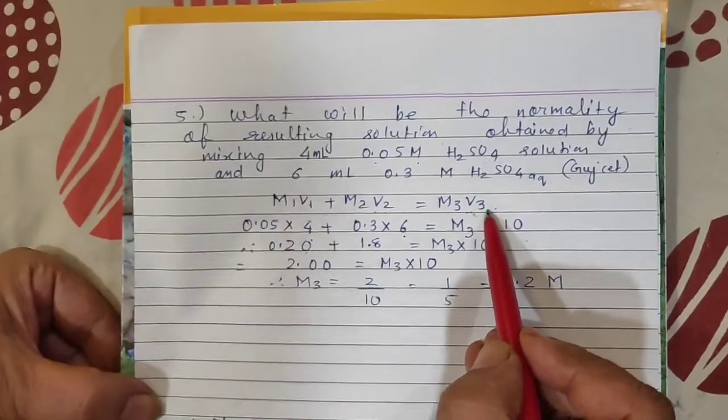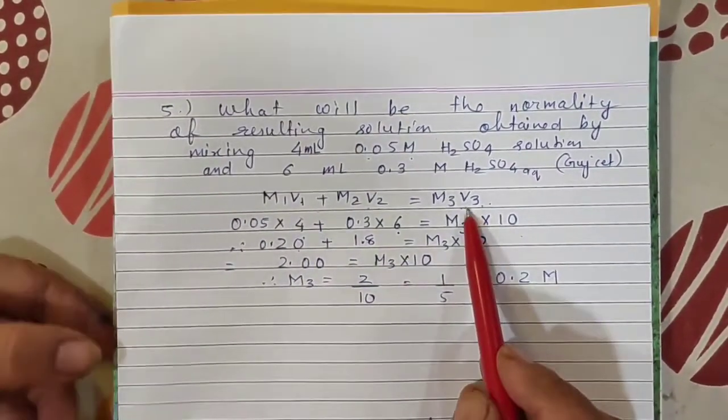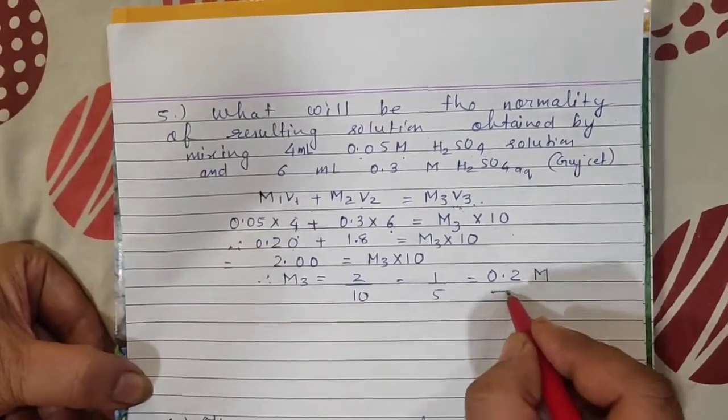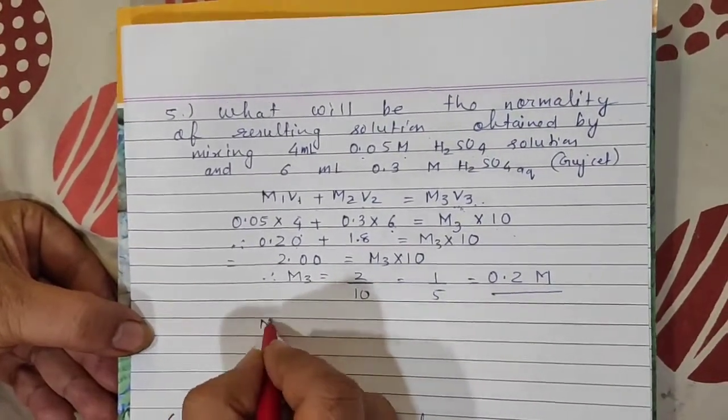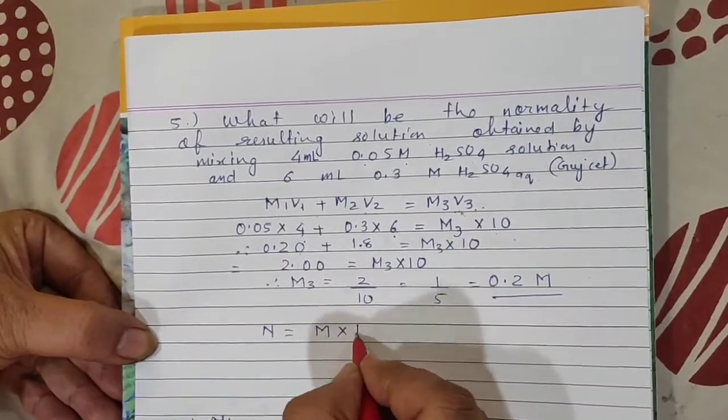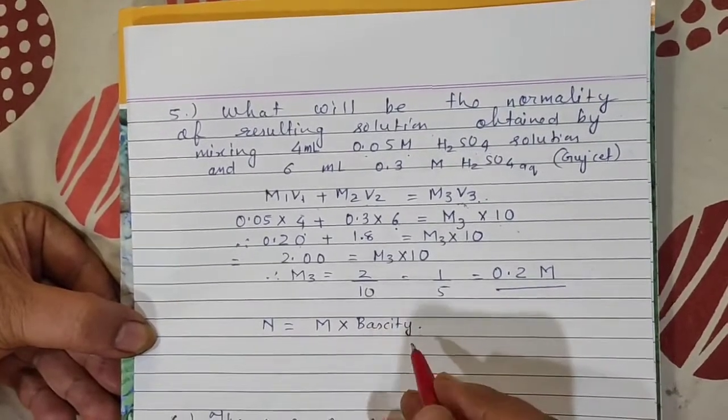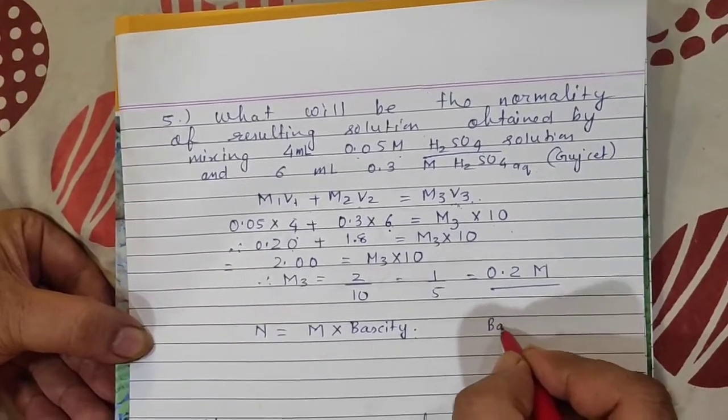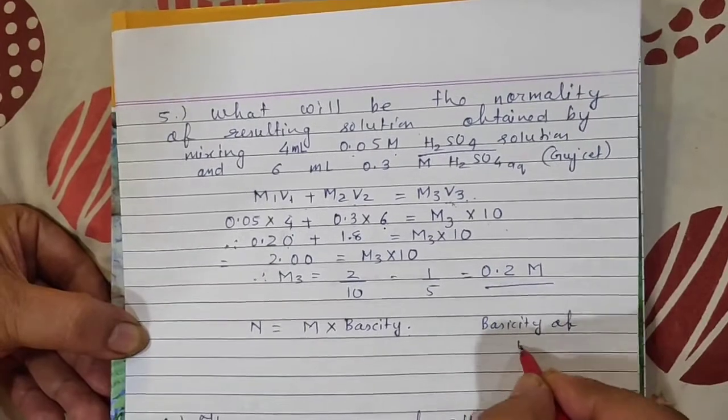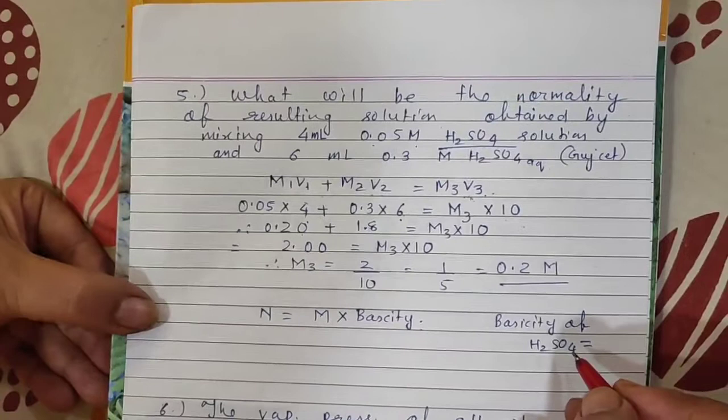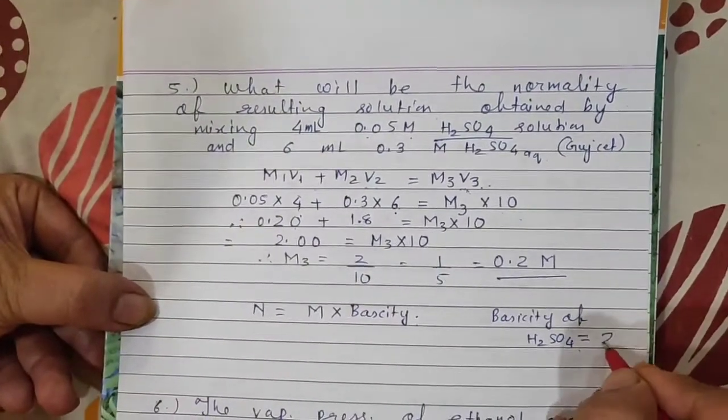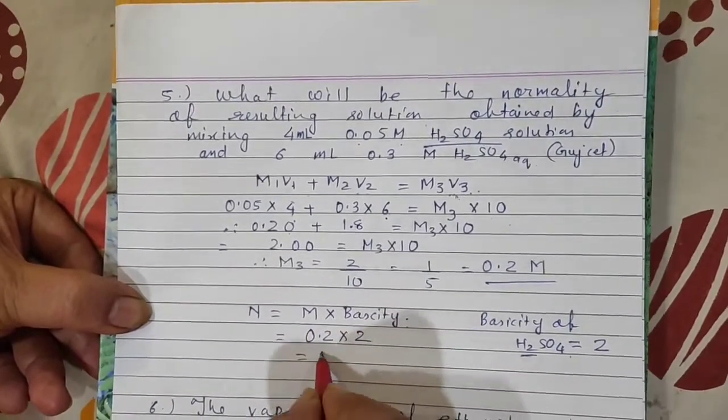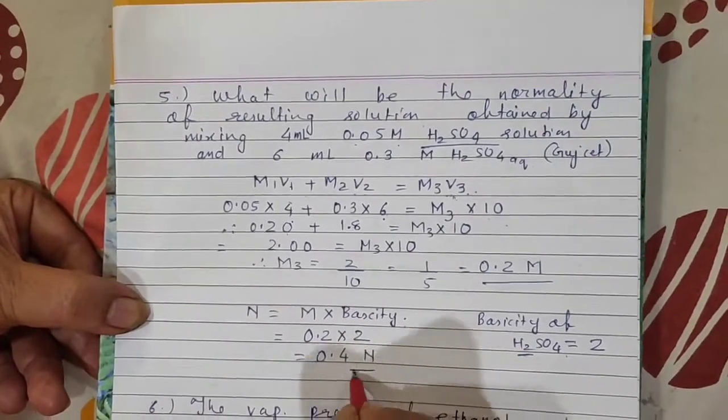I hope everybody understood. Two solutions are mixed. Third volume, one glass has 10 ml, second glass 10 ml, total volume is 20 ml. Here 4 ml, 6 ml, so V3 is 10. Put in this formula, you will get molarity 0.2 molar. Now what is normality formula? Normality equals molarity into basicity. It's acid, so basicity. What is the basicity of H2SO4? Two displaceable hydrogen are there, so basicity is 2. Therefore, 0.2 multiplied by 2, normality will be 0.4 normal. This will be the answer.